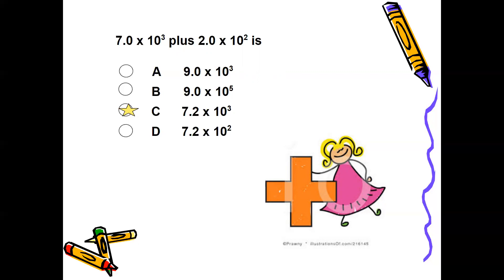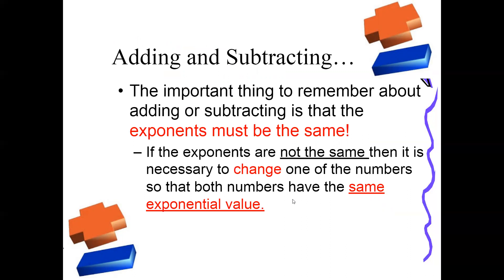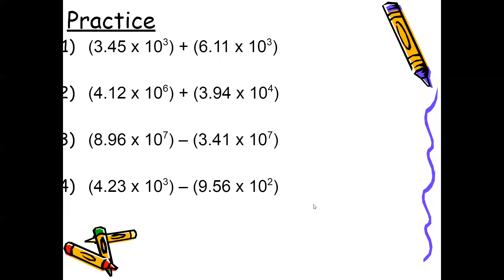The answer to the next example is A: 7.45 × 10⁵. This one involves subtraction. Remember your rules: the exponents have to be the same when adding or subtracting. If they're not the same, make them the same. If you go with the larger exponent — going up — move the decimal to the left. If you go with the smaller exponent — going down — move the decimal to the right.